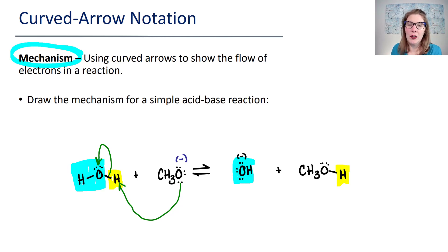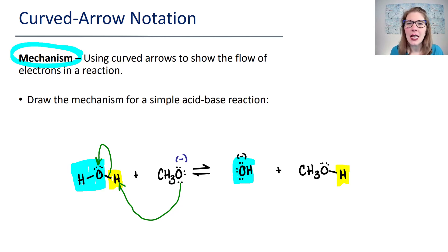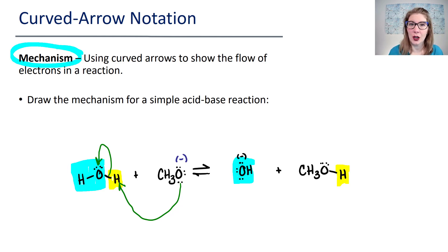Notice how I gave you what the products are. I'm giving you the products and you're practicing drawing in the curved arrows — this is a stepping stone. When you get more practice, you're going to be given two reactants and just asked to draw in the curved arrows to generate the products. But we're not there yet; it's going to take more time. Right now we're using a stepping stone where I give you the reactants and the products, and we draw in the curved arrows to practice.